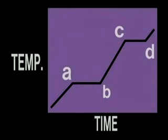On this graph of time versus temperature, the first segment represents heating of the solid. At point A, the solid melts. The temperature remains constant while melting occurs.